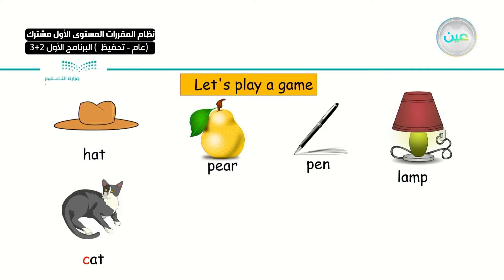What else can you do? You can change hat to cat, or change the C into R — it's going to be rat. Or you can change the A or the T. You can change the A into I — het.